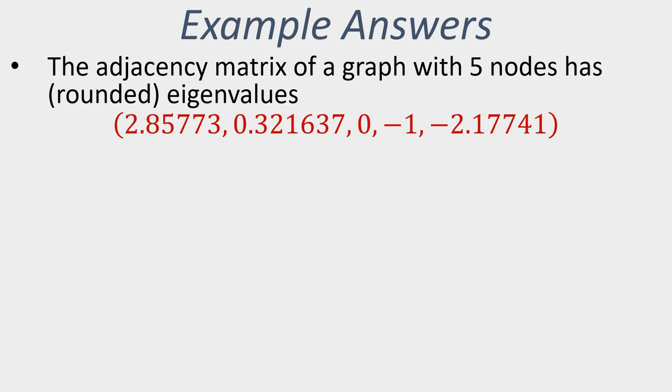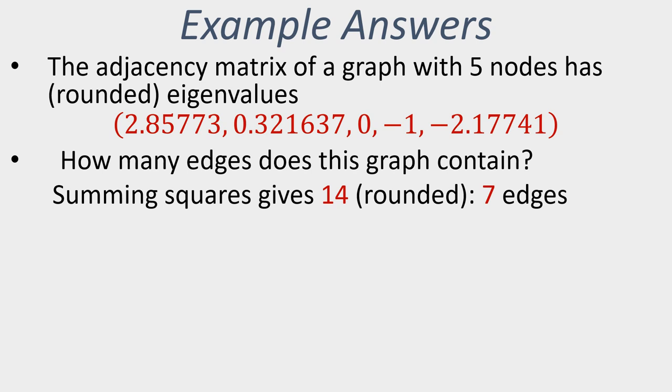So there's our graph spectrum. How many edges does that graph contain? Well, we sum up the squares of those values, and we find, allowing for arithmetic error, the total we get from those is very very slightly over 14. We find that the rounded summation gives 14; we divide that by 2, and so the graph with this spectrum contains exactly 7 edges.